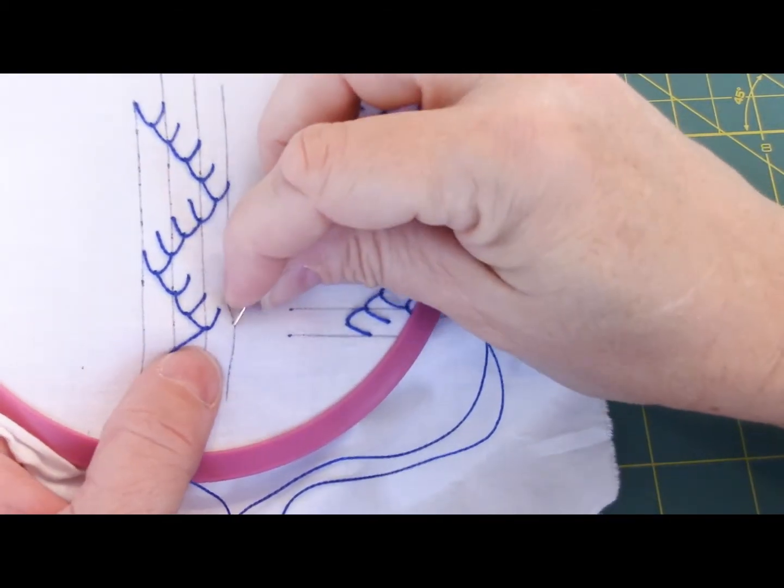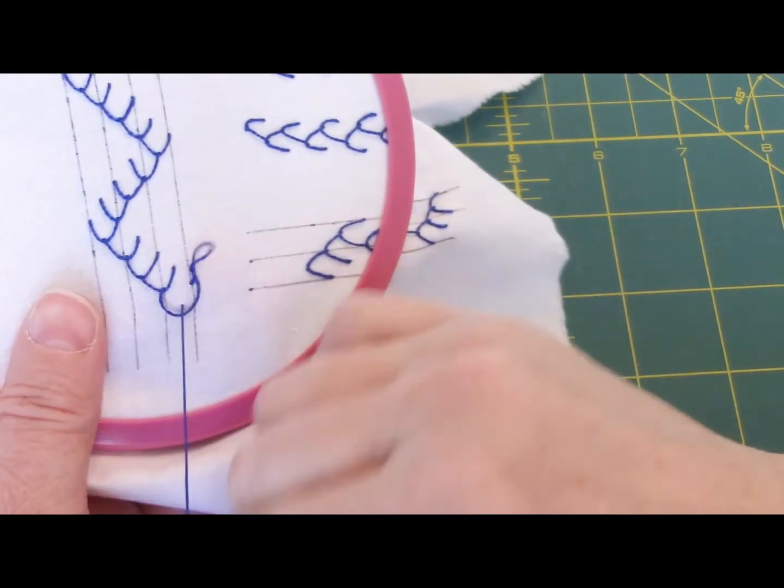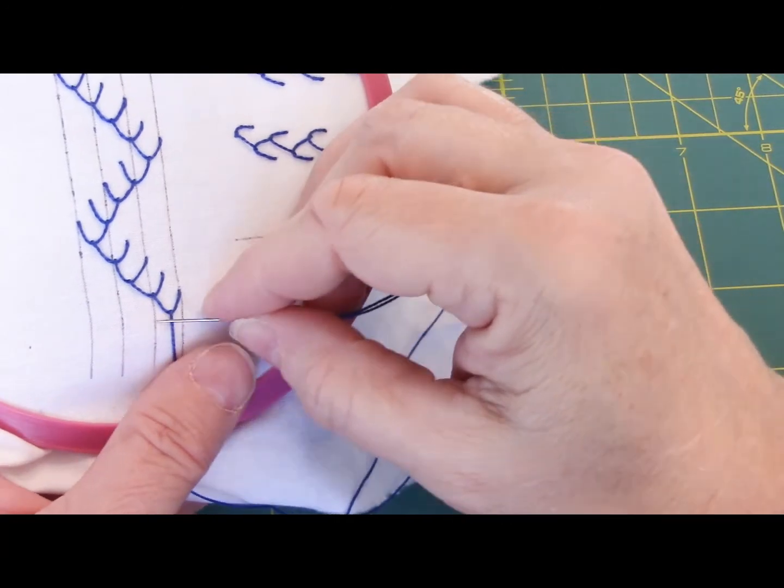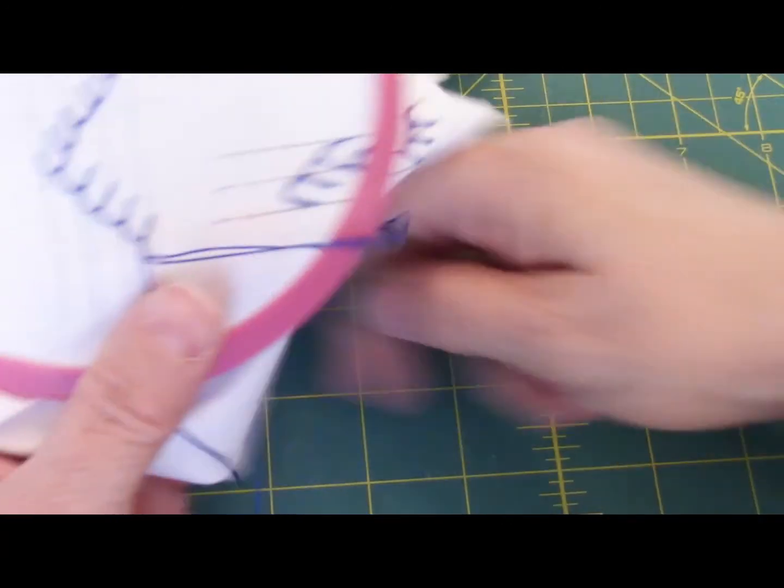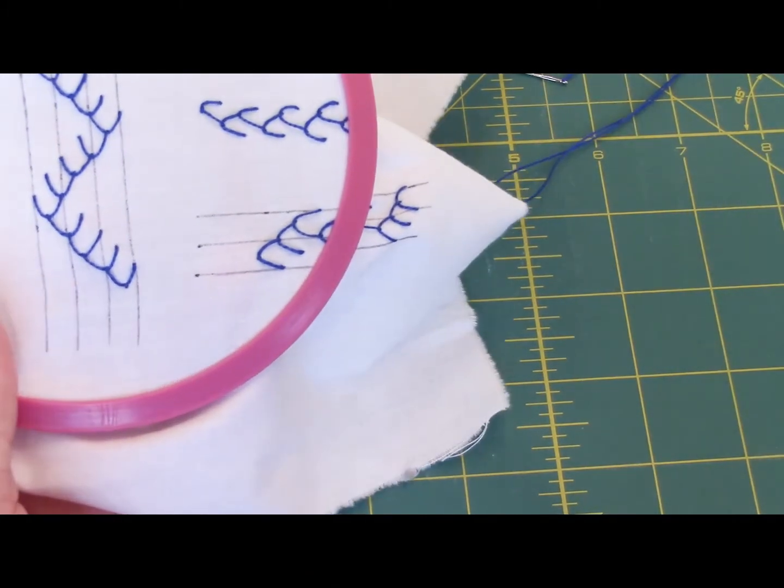And you can vary how it looks by how sharp your angle is on your V's or your U's, how wide your spacing is. And when you're at the end, then again, just tack it down. So that's the feather stitch.